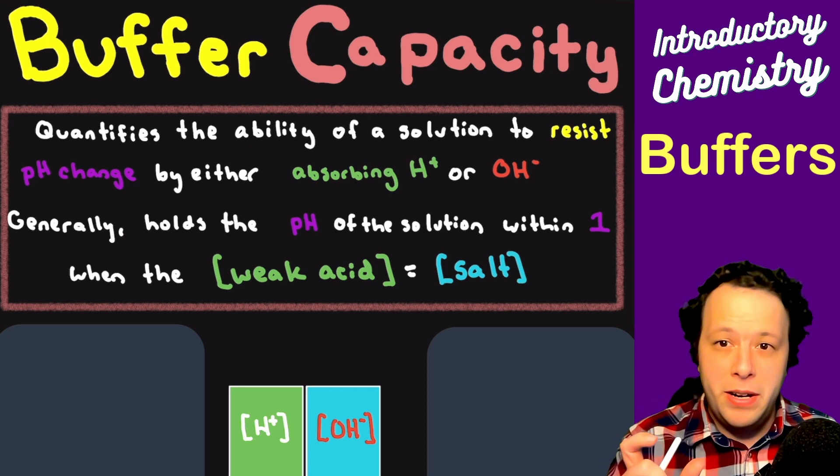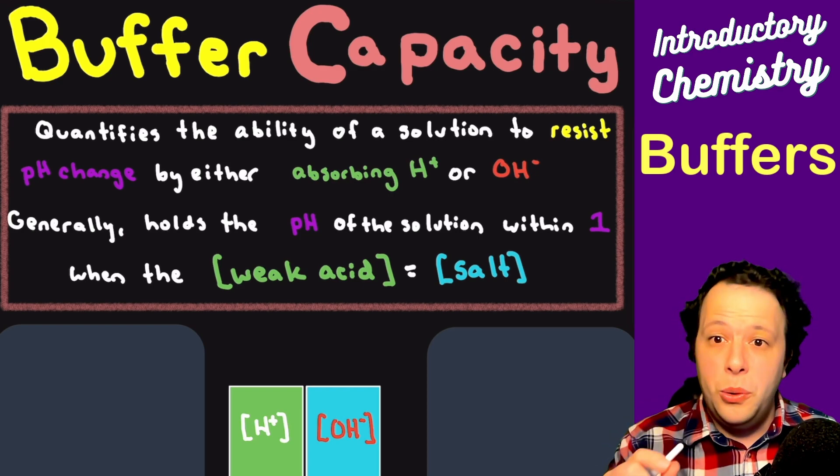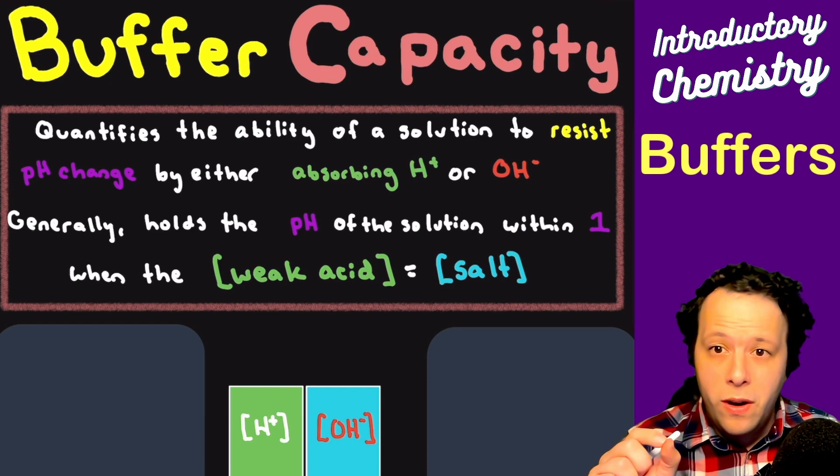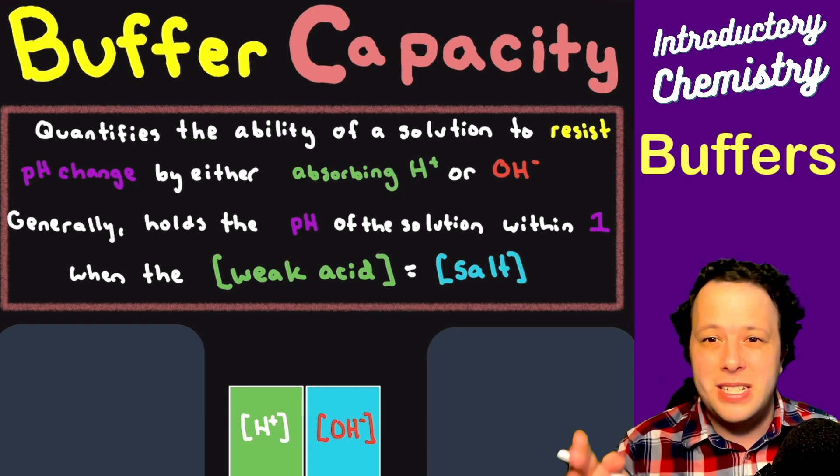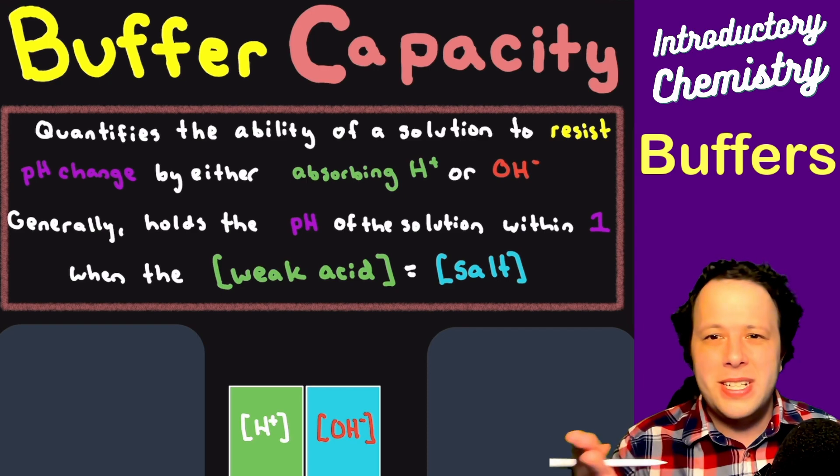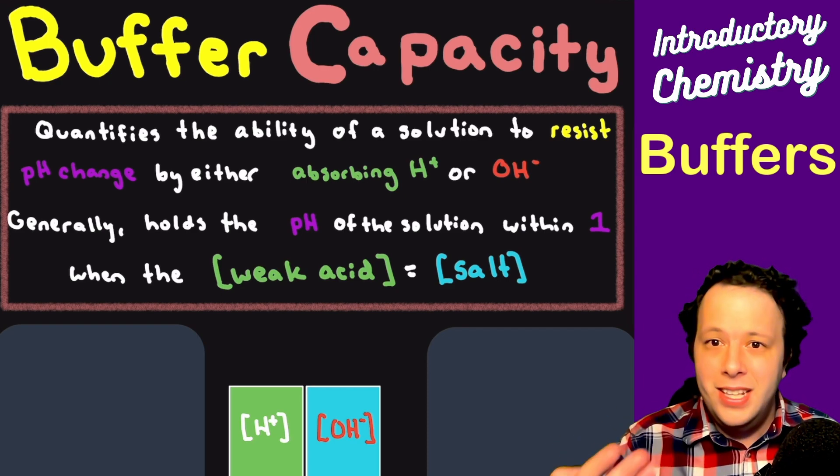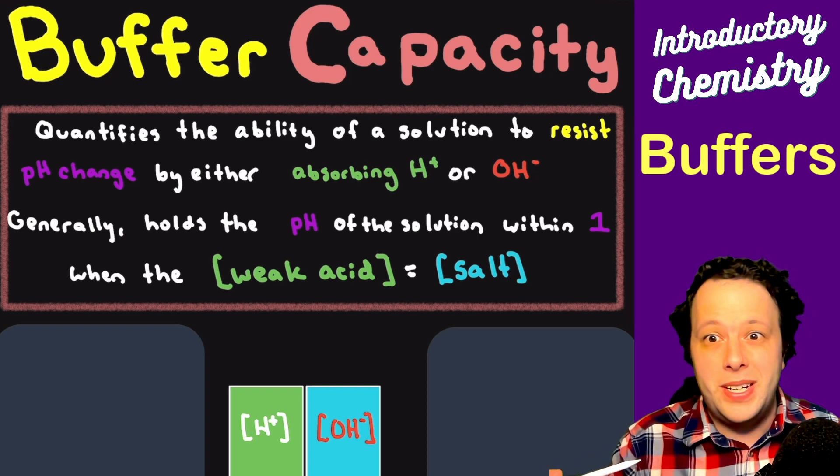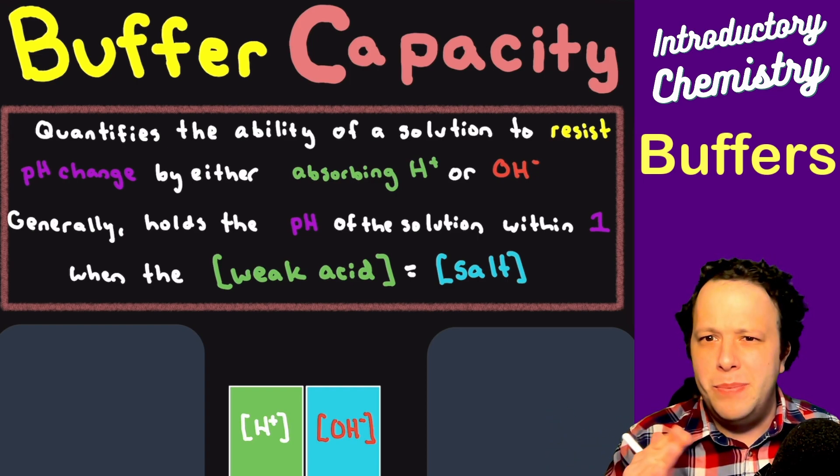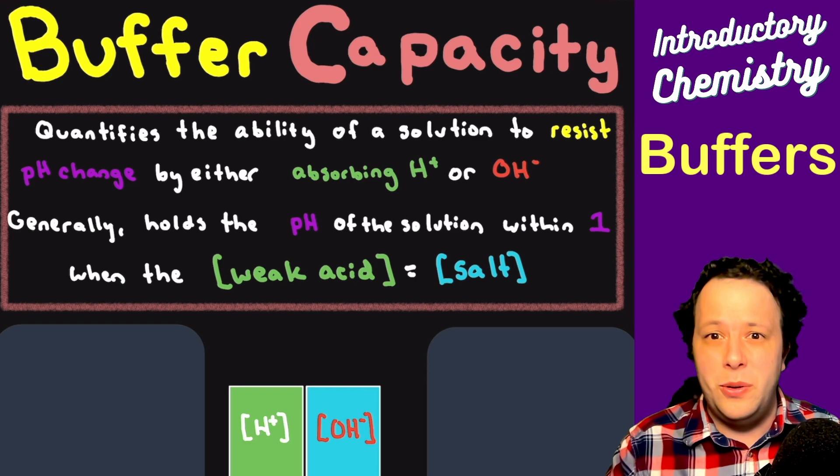With a buffer, this does it within a certain capacity. This is referred to as the buffer capacity. It can hold the pH within one of wherever the buffer is designed to work. Every single chemical series of buffers works at a different pH value.